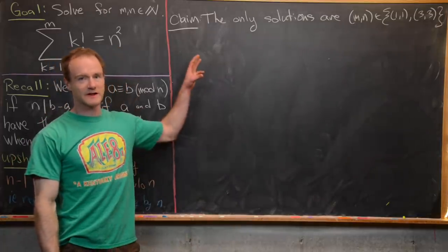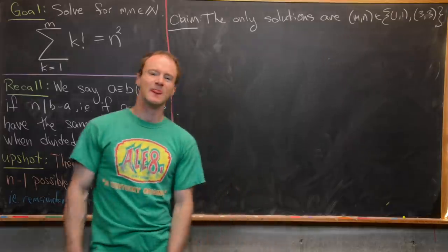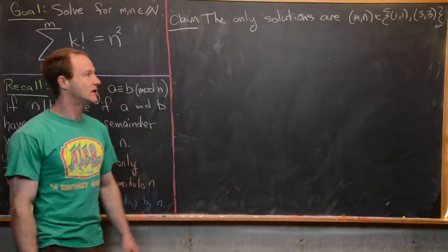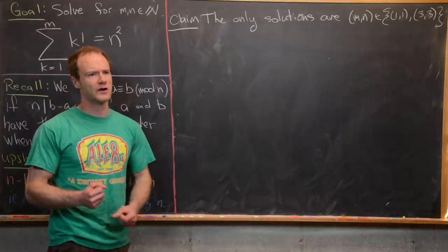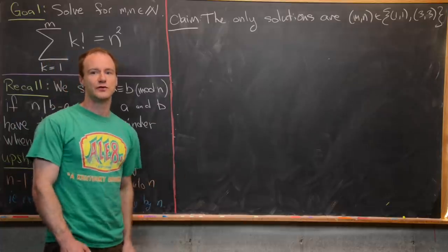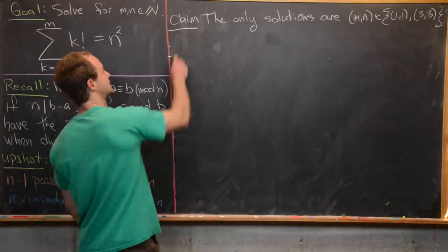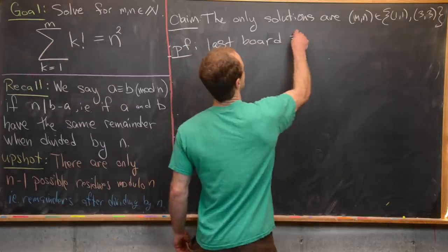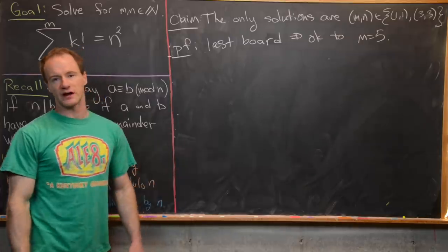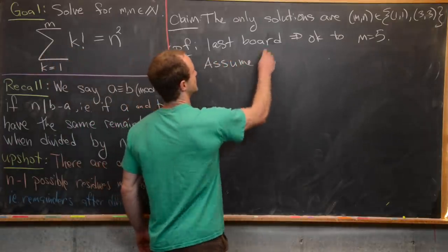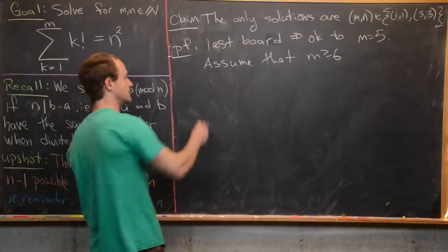Now we're ready to finish this. The claim is that the only solutions are the ordered pairs (m,n) = (1,1) and (3,3). Note: if you consider 0 a natural number, you should check the m=0 case yourself. For the proof, we've already handled cases up to m=5 by case analysis, so we only need to consider m ≥ 6.